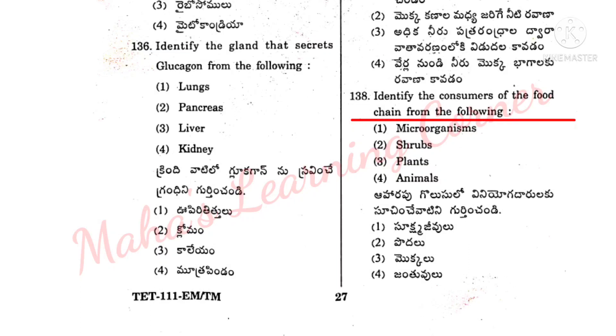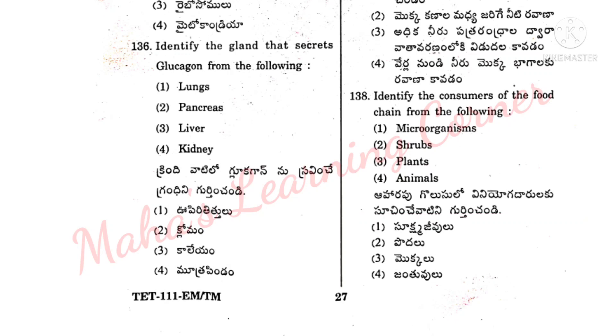Identify the consumers of the food chain from the following. Correct answer: Option 3 is the correct answer.